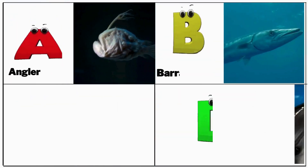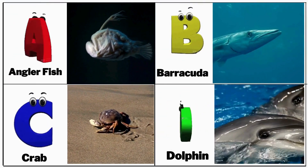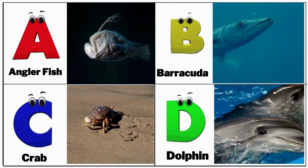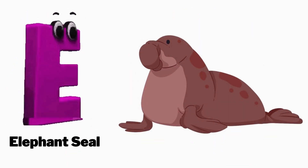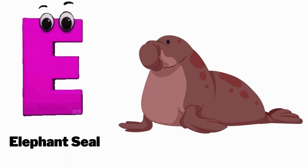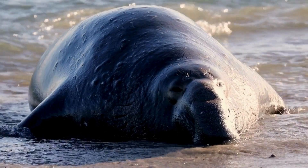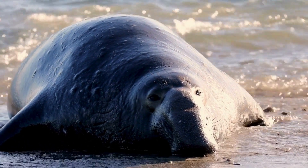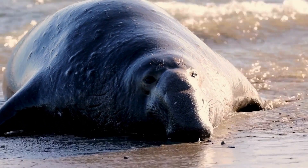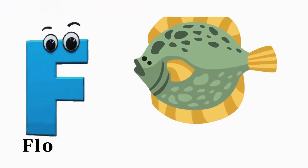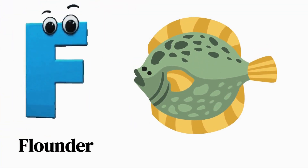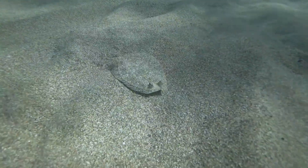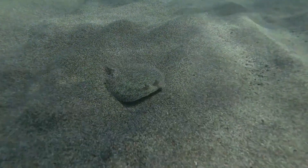E is for elephant seal, E, E, elephant seal. F is for flounder, P, P, flounder.